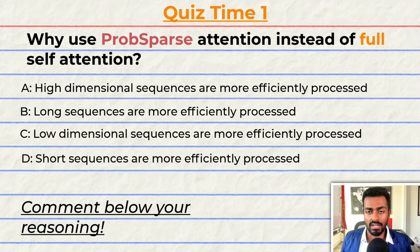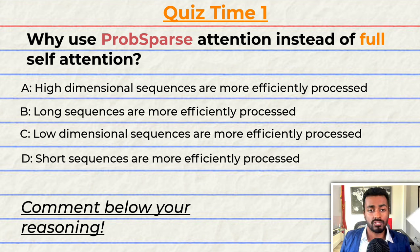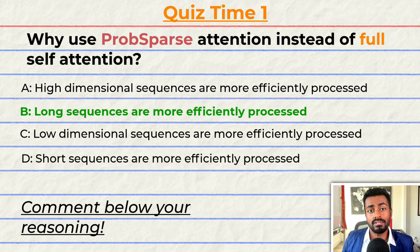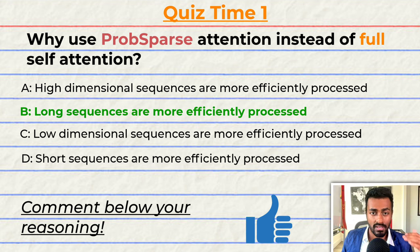Quiz time — have you been paying attention? Why use prob sparse attention instead of full self-attention? A: high dimensional sequences are more efficiently processed. B: long sequences are more efficiently processed. C: low dimensional sequences are more efficiently processed. Or D: short sequences are more efficiently processed. The correct answer is B — long sequences are more efficiently processed. But can you tell me why? Comment your reasoning below and let's have a discussion. If you think I deserve it, please give this video a like.